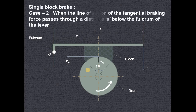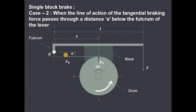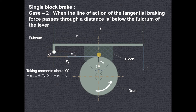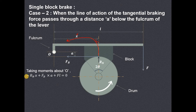Now let us see another case where the line of action of the tangential braking force passes through a distance A below the fulcrum. The fulcrum is O and the braking force is acting at a distance A below O. In this case, if we take moments about point O, starting with Rn — this Rn will again produce anticlockwise moments, and Rn multiplied by the perpendicular distance X gives Rn times X, which is negative. Then this braking force will produce a clockwise moment about O.